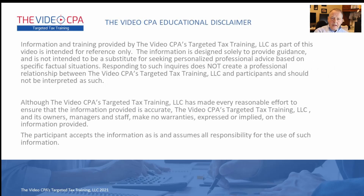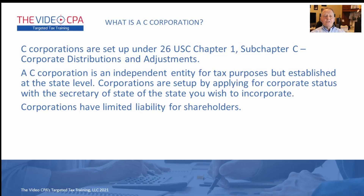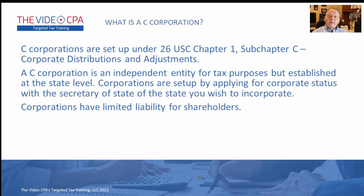A C corporation is set up under Chapter 1 of Title 26, Subchapter C, whereas an S corporation is set up under Subchapter S of the same chapter. A C corporation is an independent entity — it's taxed on its own; it's not a flow-through. An S corporation is a flow-through entity, but a C corporation is not. It's established at the state level: you apply with the secretary of state of the state you want to be incorporated in, and you get limited liability for the shareholders.